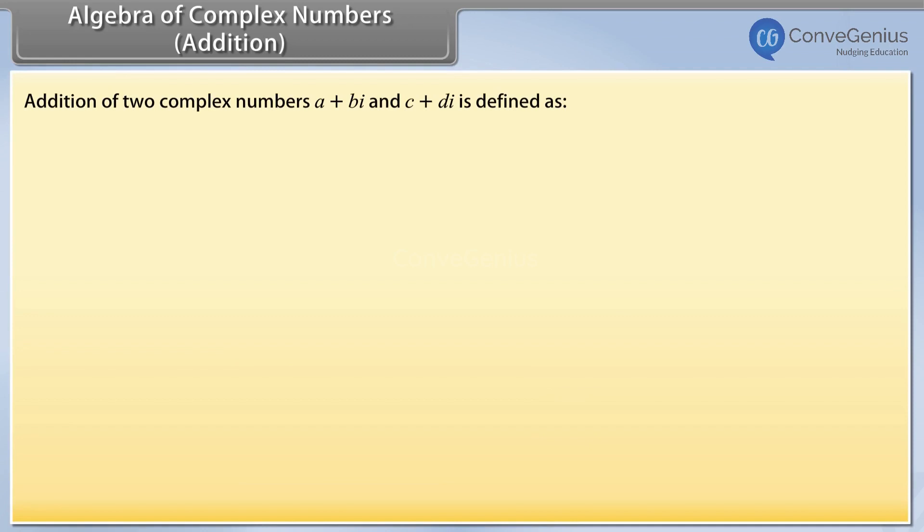Addition of two complex numbers a plus b iota and c plus d iota is defined as a plus b iota plus c plus d iota is equal to a plus c plus b plus d iota.